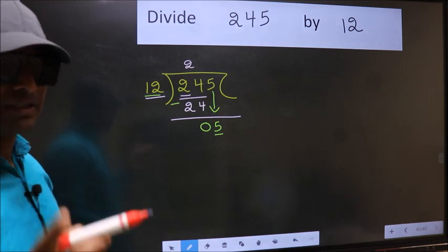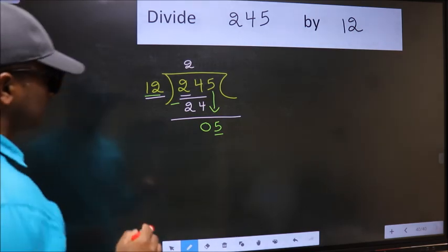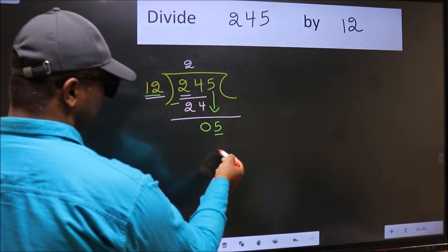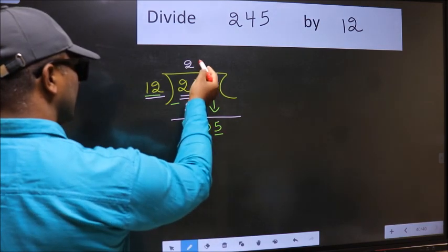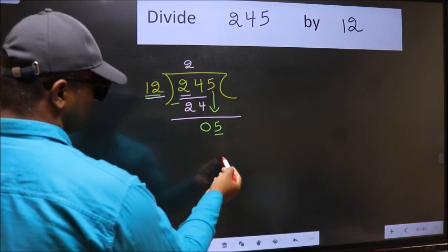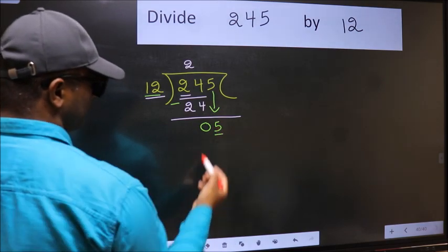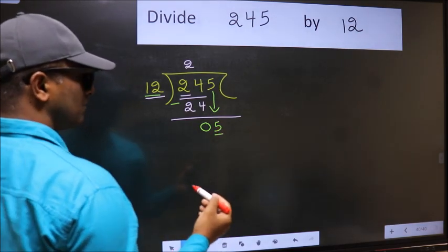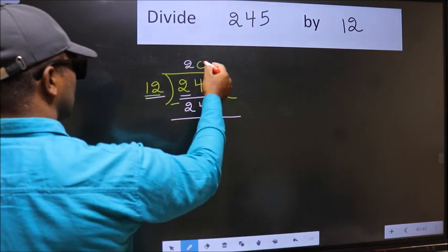Instead, what you should think of doing is, which number should we take here. If I take 1, we will get 12. But 12 is larger than 5. So what we should do is, we should take 0.